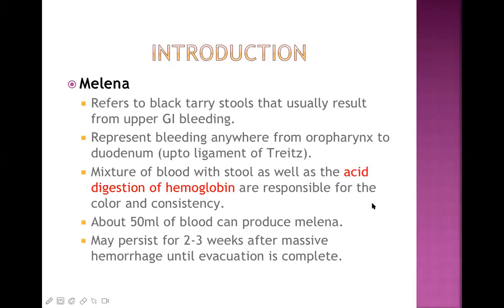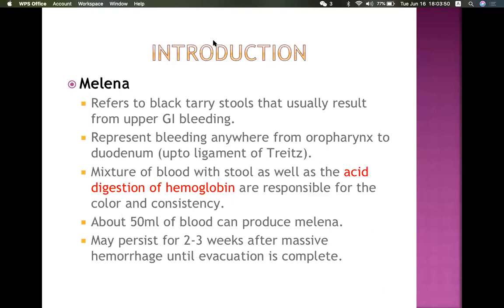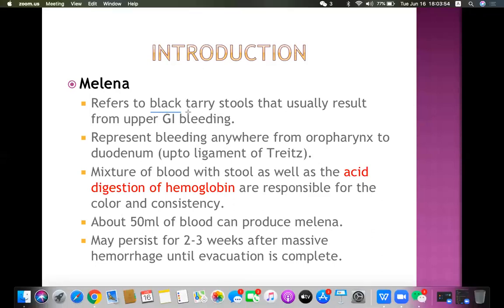What is melena? Melena refers to black and tarry stool — black and sticky stool that usually results from upper GI bleeding. It represents bleeding anywhere from the oropharynx to the duodenum, up to the ligament of Treitz. The blood has to come in contact with hydrochloric acid for it to turn into melanotic stool. Mixture of blood with stool and acid digestion of hemoglobin are responsible for the color and consistency.